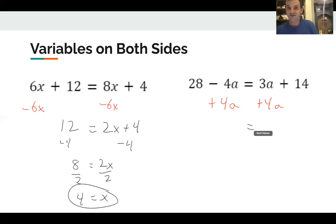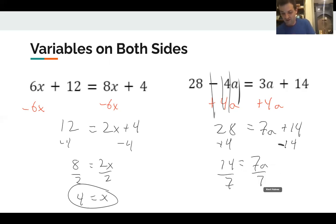And so if I add 4a to both sides of my equation, on this side, I get 28, and then -4a + 4a, those add to zero, so they cancel out. And then we get 28. Over here, we get 7a + 14. And then we're back to our normal. We subtract 14, and we get 14 = 7a. We divide by seven, and we get a is equal to two. And there we have it.